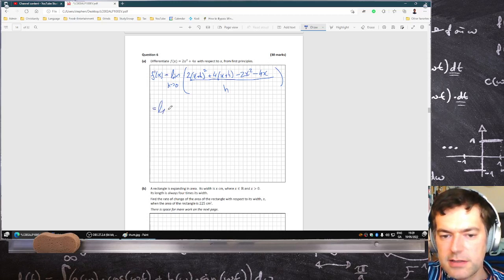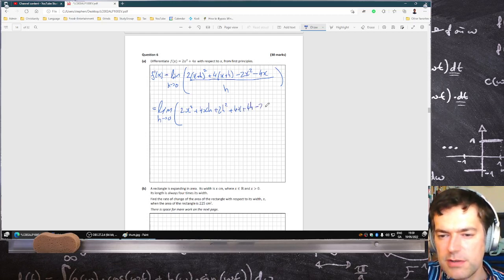So that's limit as h goes to zero, two x squared plus four x h plus two h squared plus four x plus four h minus two x squared minus four x all over h.